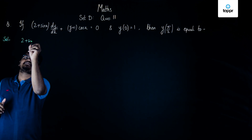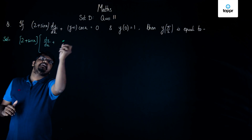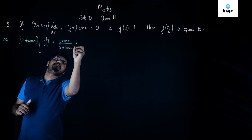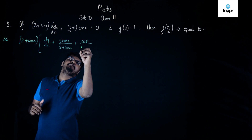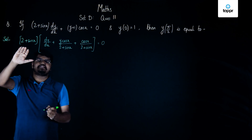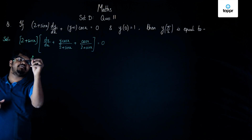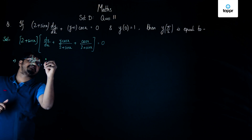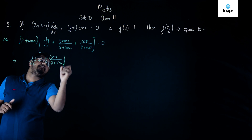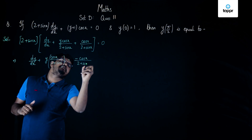When we take (2 + sin x) as common, we are left with: dy/dx + y·cos x/(2 + sin x) + cos x/(2 + sin x) = 0. Sending (2 + sin x) to the right-hand side gives the standard form: dy/dx + y · cos x/(2 + sin x) = −cos x/(2 + sin x).